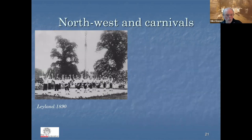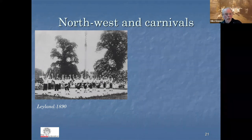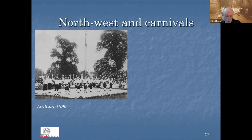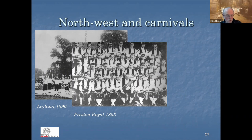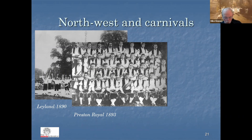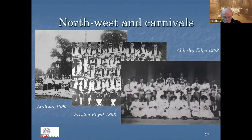Here are the Leyland Morris men at their first appearance in 1890 — they were an enormous success, and within the decade had spawned literally dozens of teams in the Northwest. Costumes were a significant part of the attractiveness: Spanish bolero jackets became popular, worn by the Preston Royal men in 1893. Almost all new teams used wands — short ribbon sticks — like the Godleyhill men, unlike the slings of older rush-cart teams. So here we are in the 1890s, when Morris was supposedly wholly discontinued, and there are literally dozens of teams springing up in the Northwest: men's, boys', women's, girls', and mixed teams.